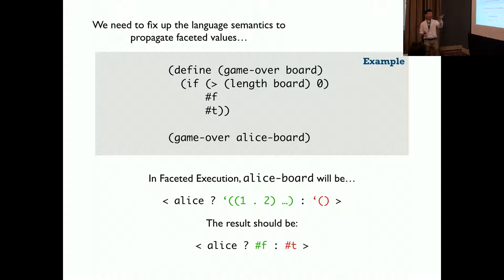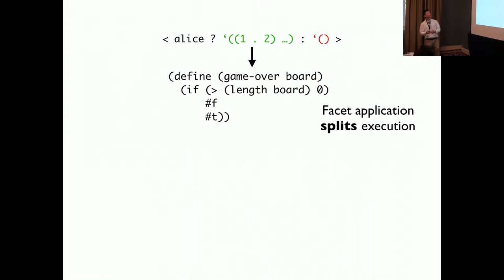In faceted execution, Alice's board will be represented as Alice, a list of x y pairs, Alice's board, and empty board. And the result after the evaluation should be Alice, false, and true.